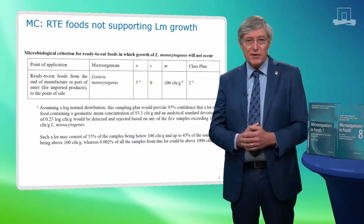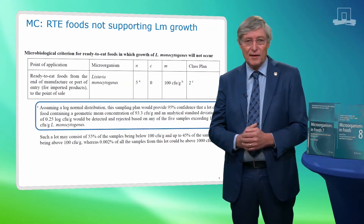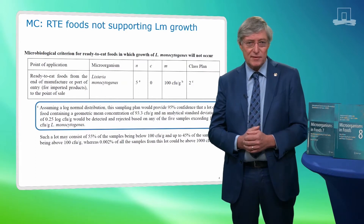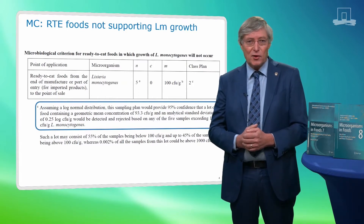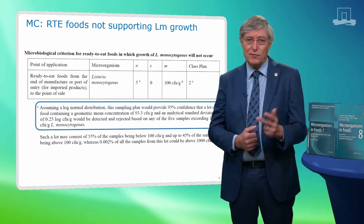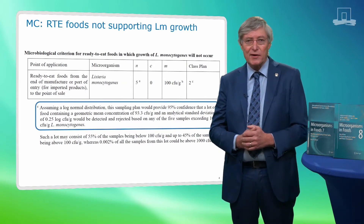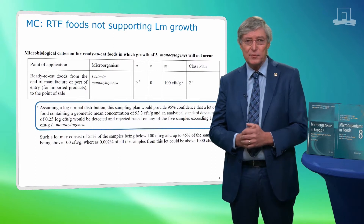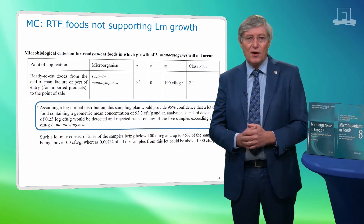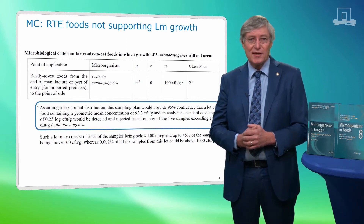The performance of this MC is expressed in reference C to the sampling plan. This reference states that there are three assumptions underlying the performance expressed. One: that LM counts are log-normally distributed. Two: that the standard deviation is 0.25 log CFU per gram. And three: that the confidence of detecting a non-compliant lot is 95%. Given these assumptions, the geometric mean of the frequency distribution of concentrations is 93.3 CFU per gram.